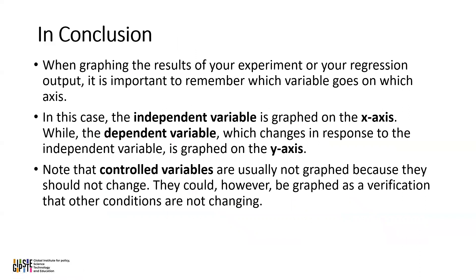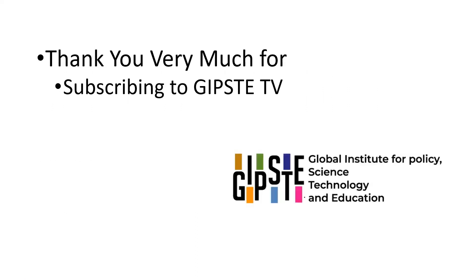In conclusion, when graphing the results of your experiment or regression output, the independent variable goes on the X-axis and the dependent variable always goes on the Y-axis. Note that control variables are usually not graphed because they should not change — however, they could be graphed as verification that other conditions are not changing. Thank you very much for subscribing to GIFS TV, and we'll see you all in the next video.